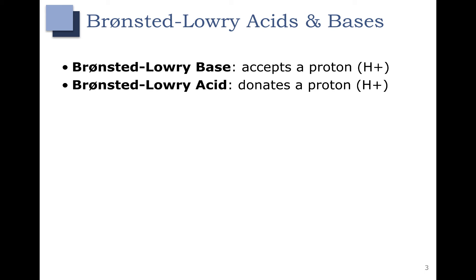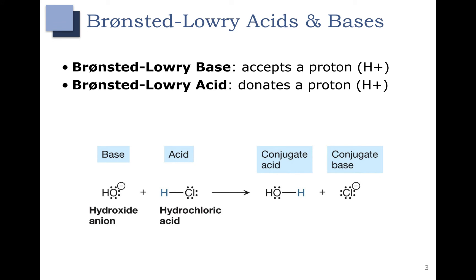Let's look at an example. Hydroxide anion is going to accept a proton — you can see this proton in blue — from hydrochloric acid, and becomes water. Hydrochloric acid donates a proton to hydroxide and becomes Cl⁻. Based on the Bronsted-Lowery definition, hydroxide anion, which accepts a proton, is a base, and hydrochloric acid, which donates a proton, is an acid.